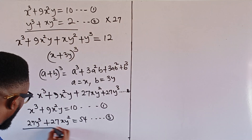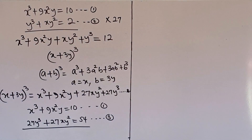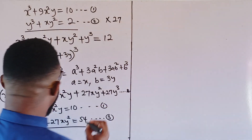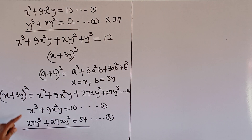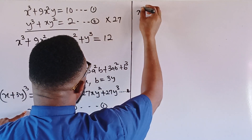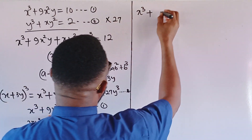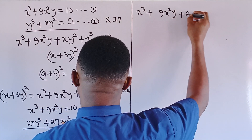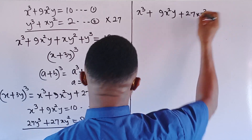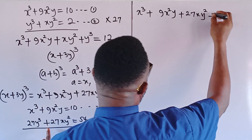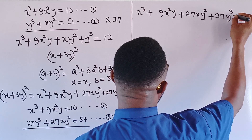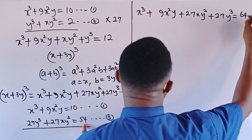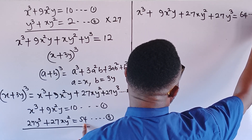I will add these two equations together, arranging systematically. Adding equation 1 and equation 3 gives: x³ plus 9x²y plus 27xy² plus 27y³, and on the right side we have 10 plus 54, which is 64. I will call this equation double star.